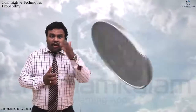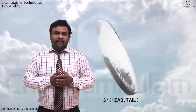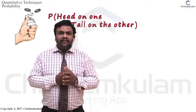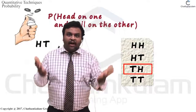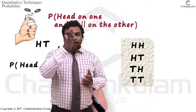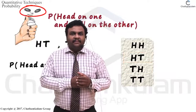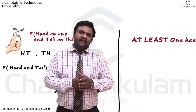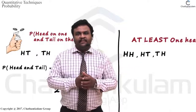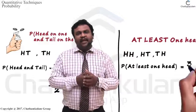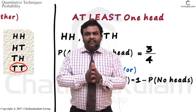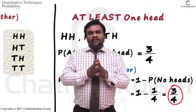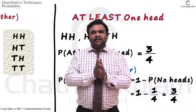Total outcomes means when we are tossing a coin, the outcomes we can expect are head and tail. When we are tossing two coins, the total outcomes are: head-head, head-tail, tail-head, tail-tail. When we are rolling a single dice, the total outcomes are 1, 2, 3, 4, 5, 6. When rolling two dice, there are 36 possible outcomes. All these total possible outcomes can be represented as the sample space of an experiment.